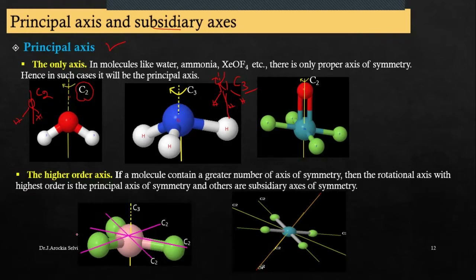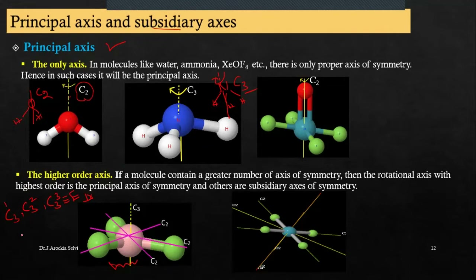There are certain molecules in which more than one axis of symmetry is possible. We have seen BF3 previously. In BF3, we have C3, and when the axis is perpendicular we have C3 rotations. When the axis is in the plane, we have C2 — three C2s.